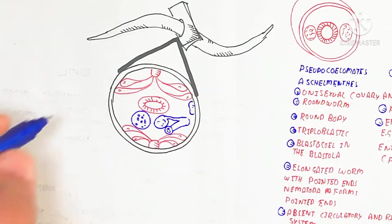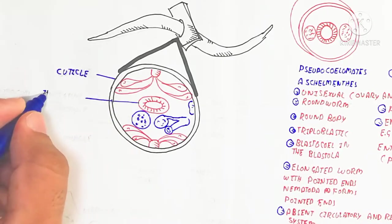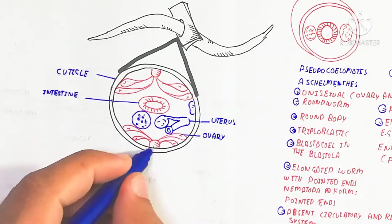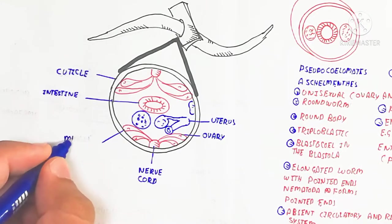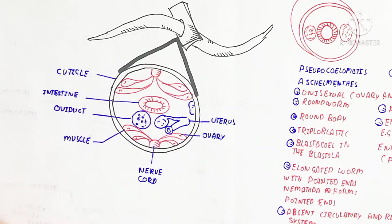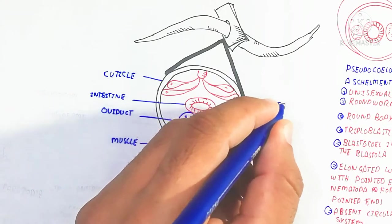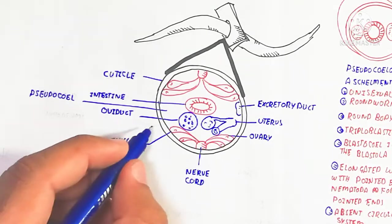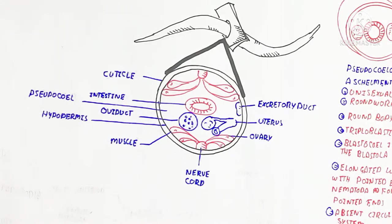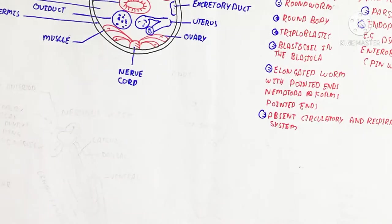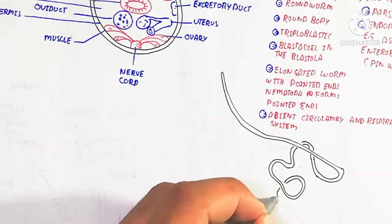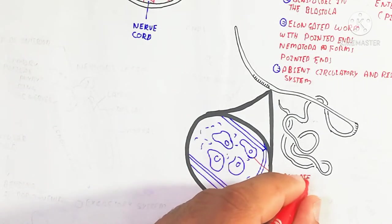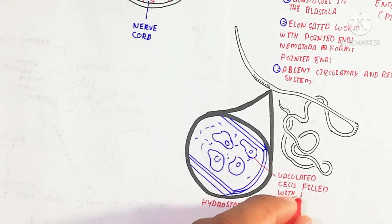In cross-section, the digestive system of the nematode is less developed compared to the earthworm or other invertebrates. The intestine is derived from endoderm, while the uterus contains ovary and testis because some are hermaphrodite. The nerve cord is attached to the muscle for contraction. Longitudinal muscles are present, as well as lateral muscles, but circular muscle is absent.